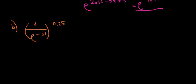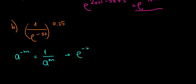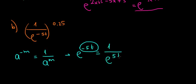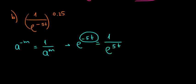First, let's look at e to the power of minus 5t. This uses the negative exponent rule: a to the power of minus m equals 1 divided by a to the power of m. So e to the power of minus 5t equals 1 divided by e to the power of 5t.